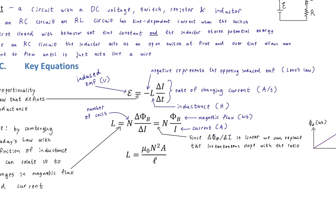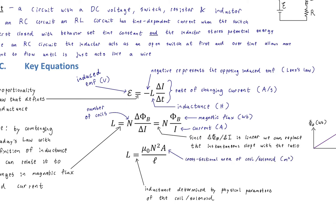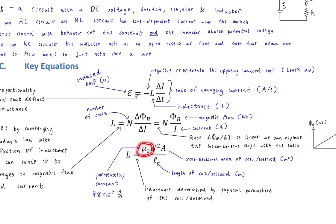The third formula is how we actually build an inductor — inductance determined by the physical parameters of the coil or solenoid. It's based on the cross-sectional area A in square meters, the length l in meters, and the permeability constant μ₀ — which shouldn't be a surprise since we're talking about magnetic fields. Permeability is associated with magnetic fields just like permittivity is associated with electric fields. This formula also includes N, the number of coils.